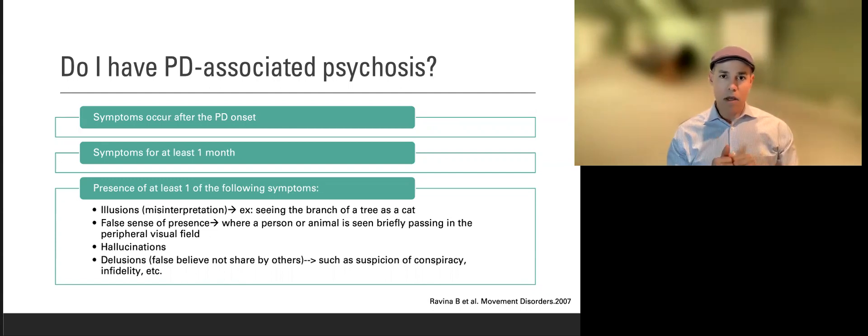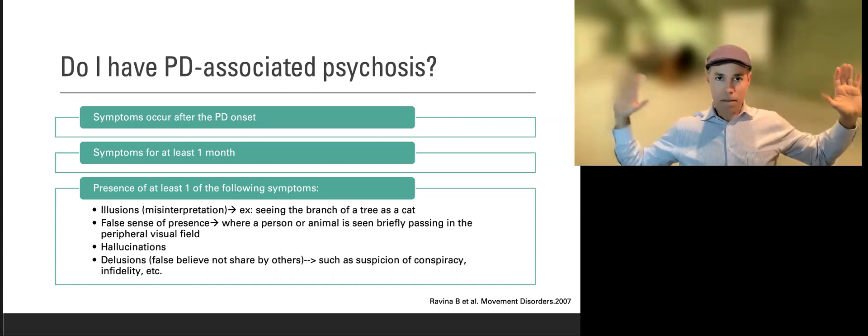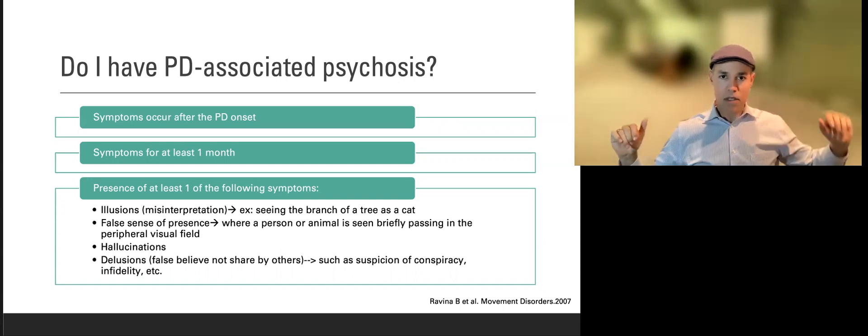The other one is a false sense of presence. For example, patients sometimes tell you that they are seeing things in the corner of the visual field, seeing like a person, seeing like an animal. Then when they look, there's nothing. That's a false sense of presence.